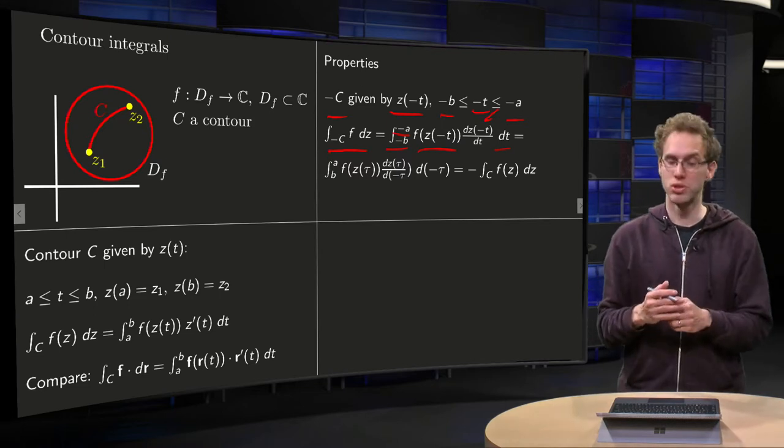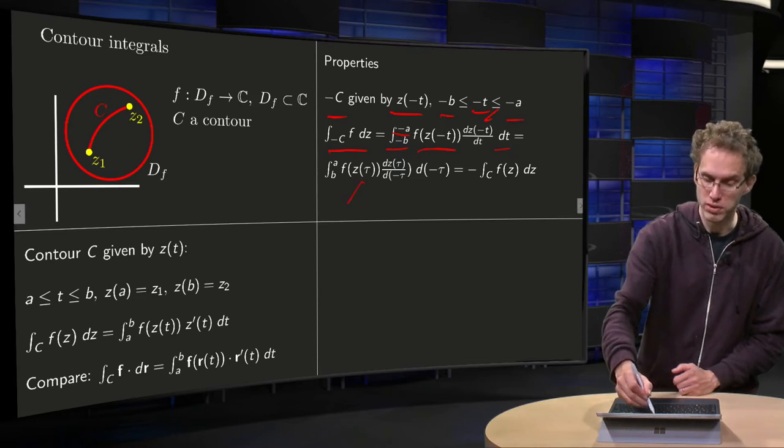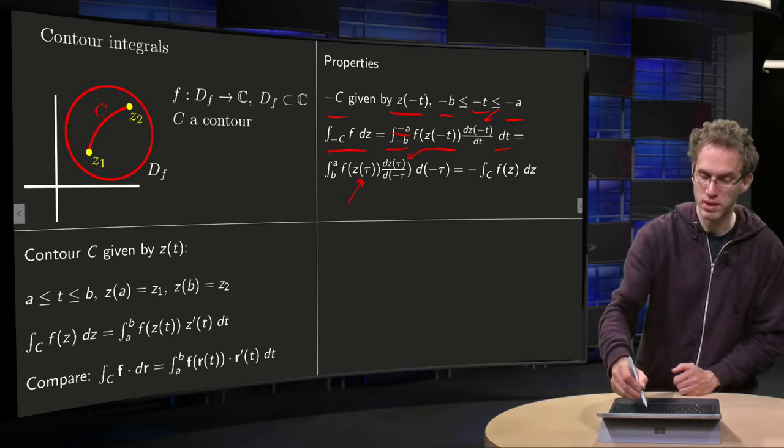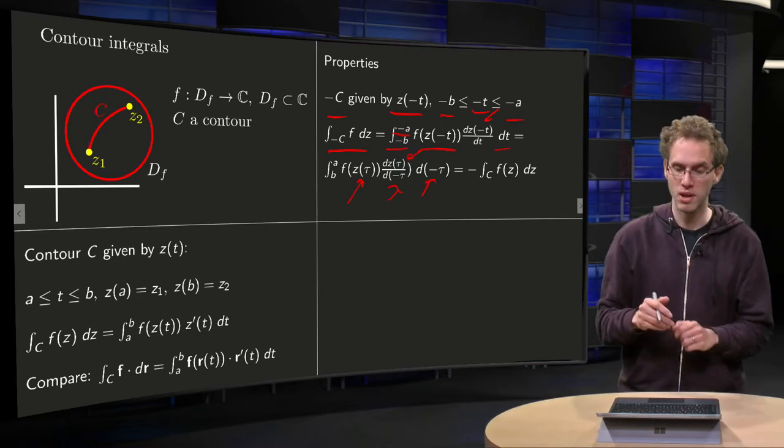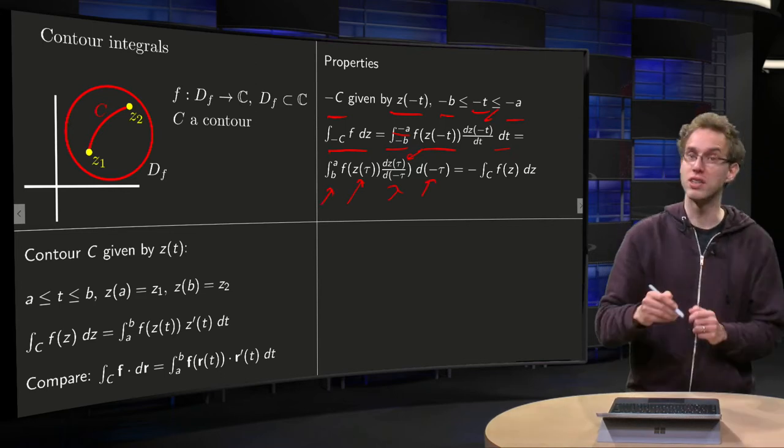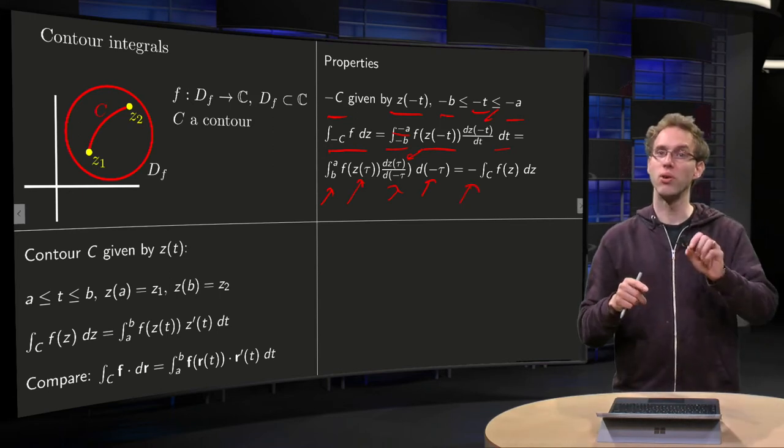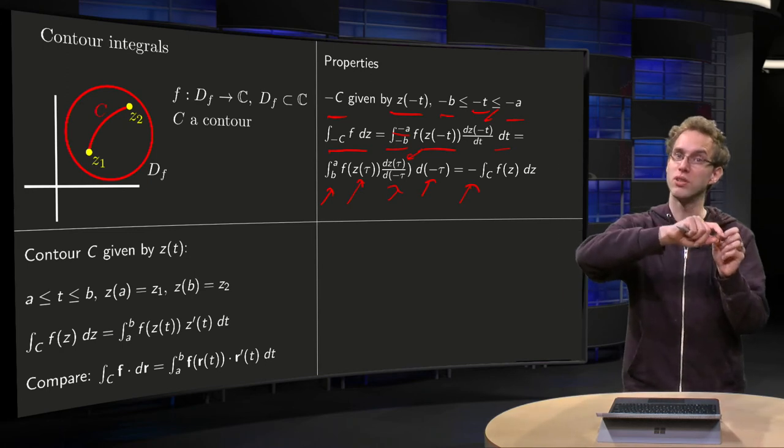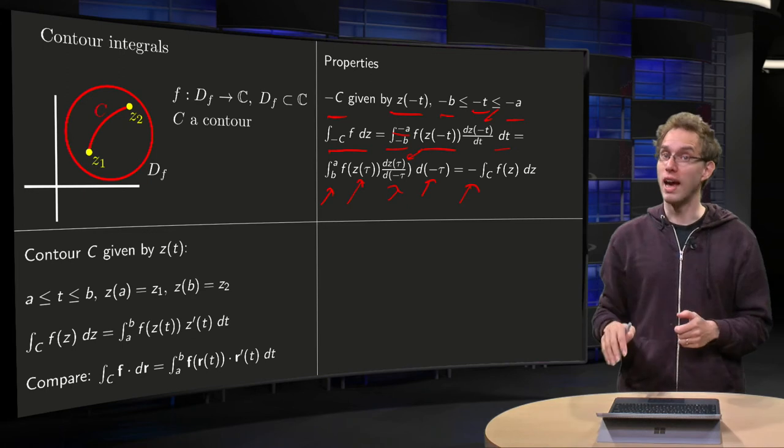And you can substitute T equals minus tau, then you get f of z of tau, dz tau dT, dT is minus d tau and d minus tau, so those minus signs cancel out, and you go from B to A instead of from A to B. You can revert the order, but that costs a minus sign, so the integral along minus C equals minus the integral along C. This is an additional minus sign, just as what you would expect.